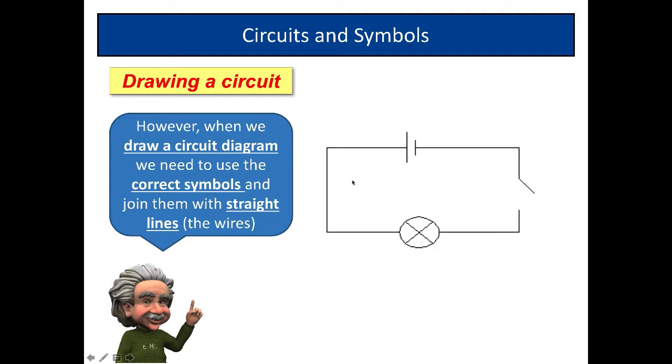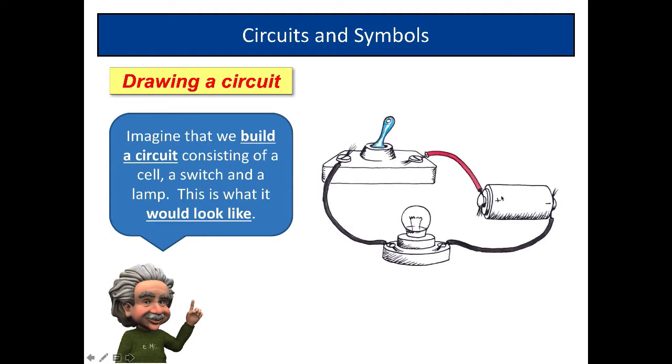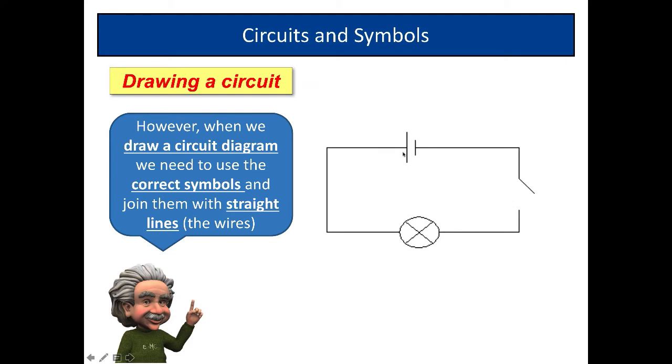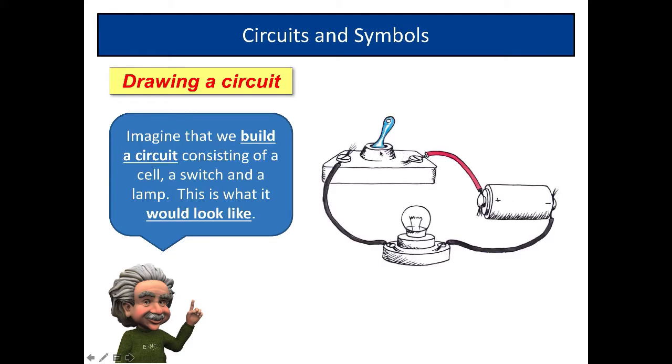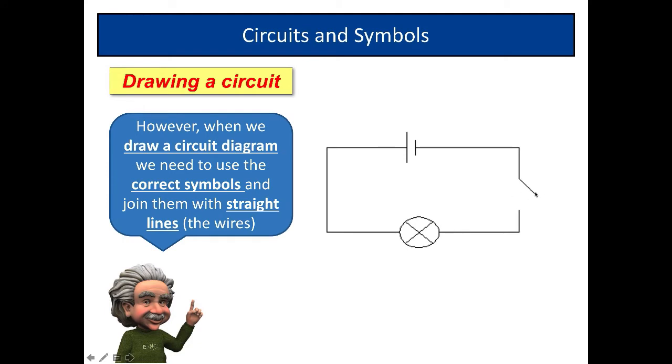We draw it using the correct symbols. We had a cell, there's a cell there. And there's a symbol for the cell. We had a switch, and there's a symbol there for the switch.